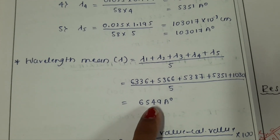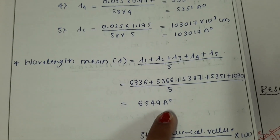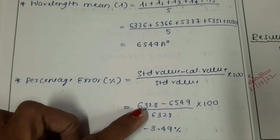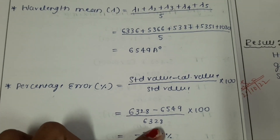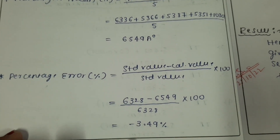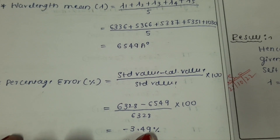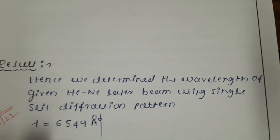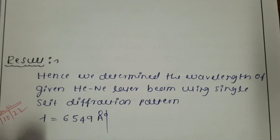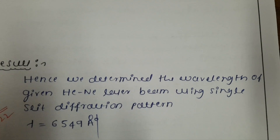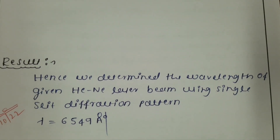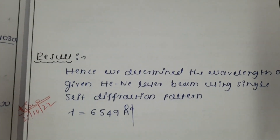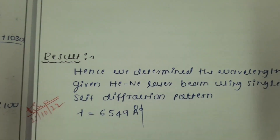The calculated average wavelength is about 6549 angstroms. The standard value is 6328 angstroms, and the error is about 3.49%. Finally, we determine that the wavelength of the given helium-neon laser beam using single slit diffraction is about 6549 angstroms.